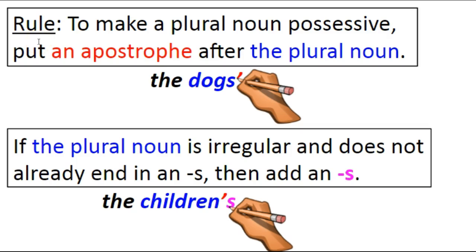First rule: to make a plural noun possessive, put an apostrophe after the plural noun. So we have the plural noun 'the dogs.' There's not one dog — there are multiple dogs. They possess or own something; that something belongs to them. Maybe it's the dogs' yard. There are several dogs in a yard — the dogs' yard. An apostrophe will be placed after the plural noun.